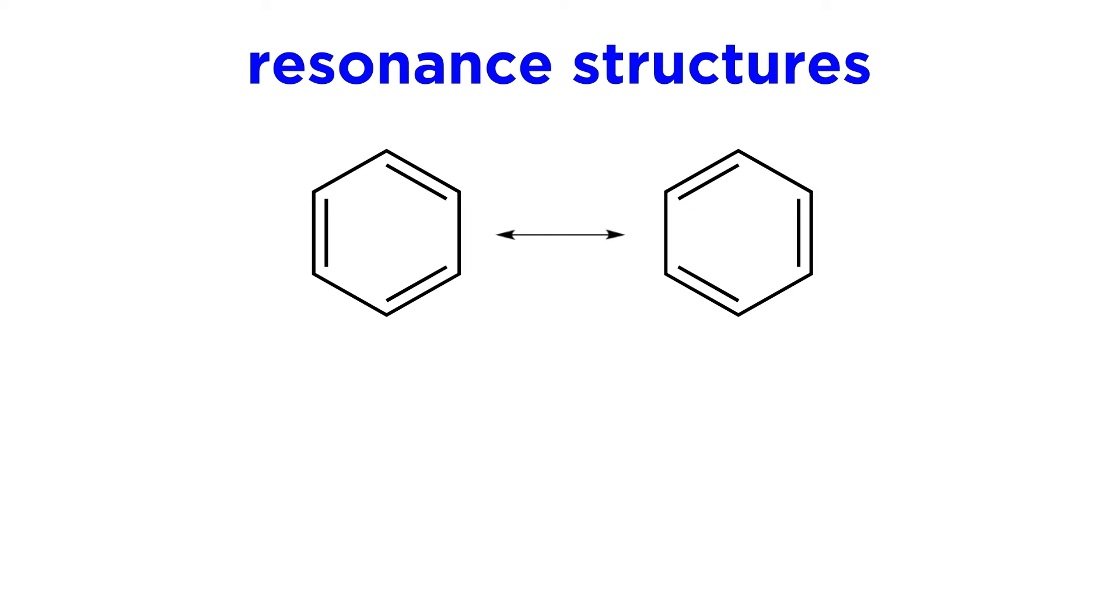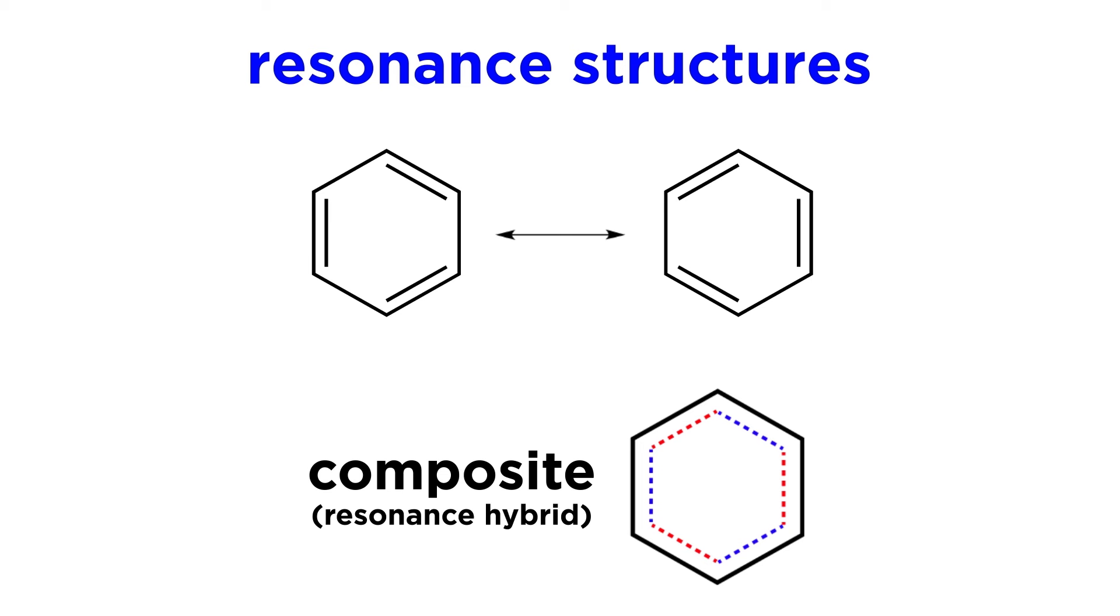Take benzene, for example. This has two resonance forms, depending on where the pi bonds sit, but the composite has pi electron density delocalized around the entire ring. So, individual resonance forms will be important to be able to draw when describing how that molecule does chemistry, but we must always be aware of the resonance hybrid.